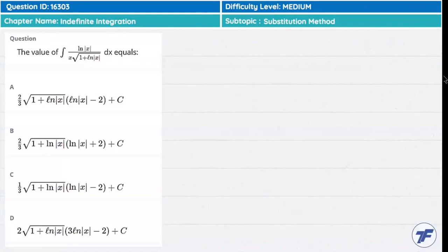Let's talk about this question. The value of the integration of ln(|x|) divided by x, in the denominator under the root of 1 plus ln(|x|). So what do we do in this question?